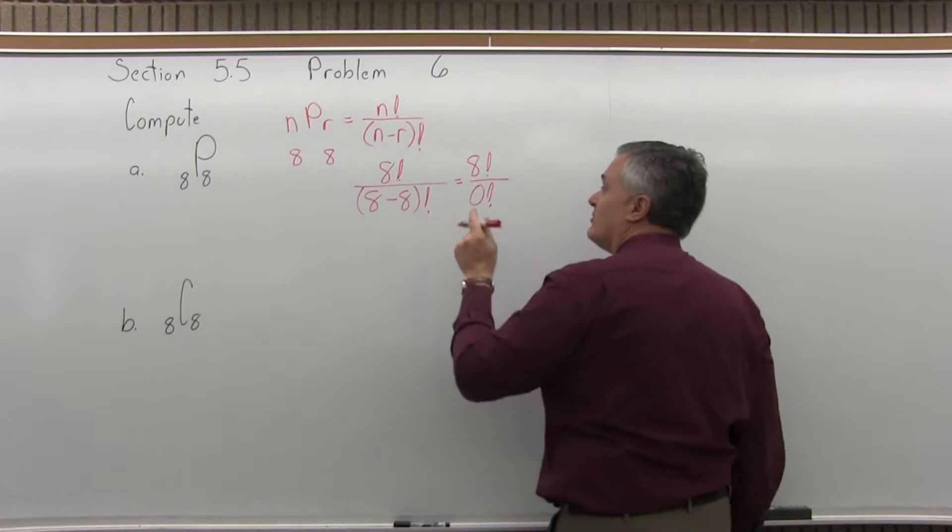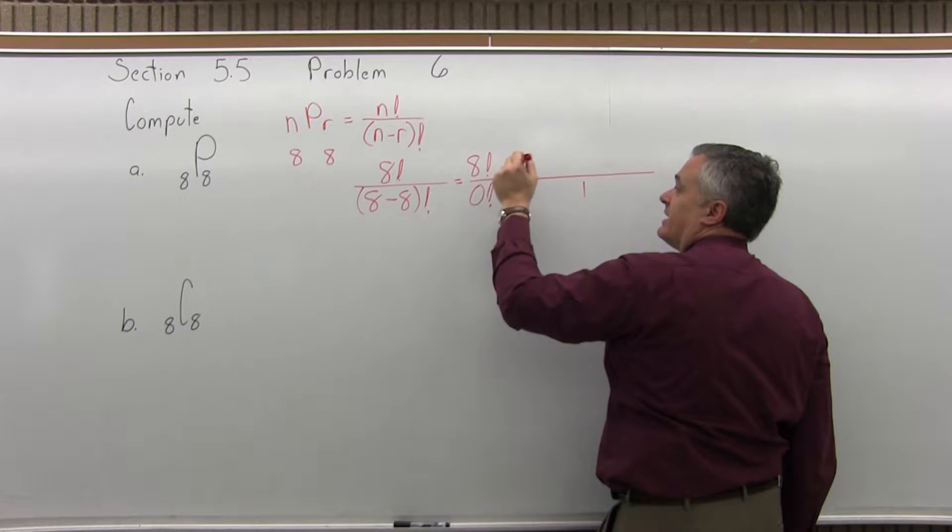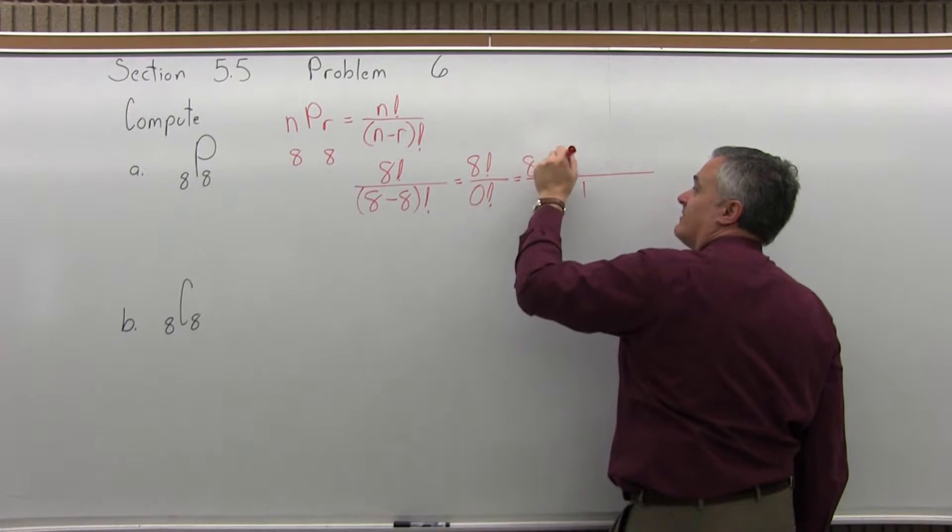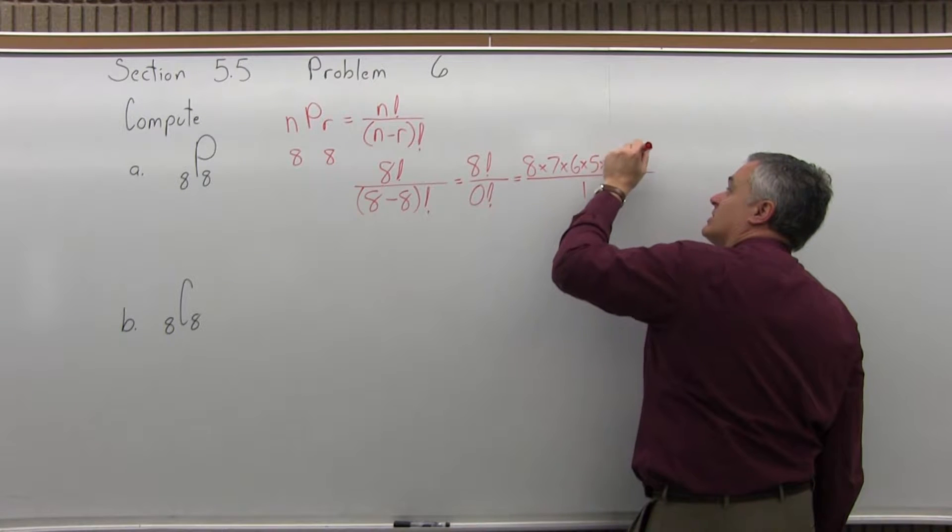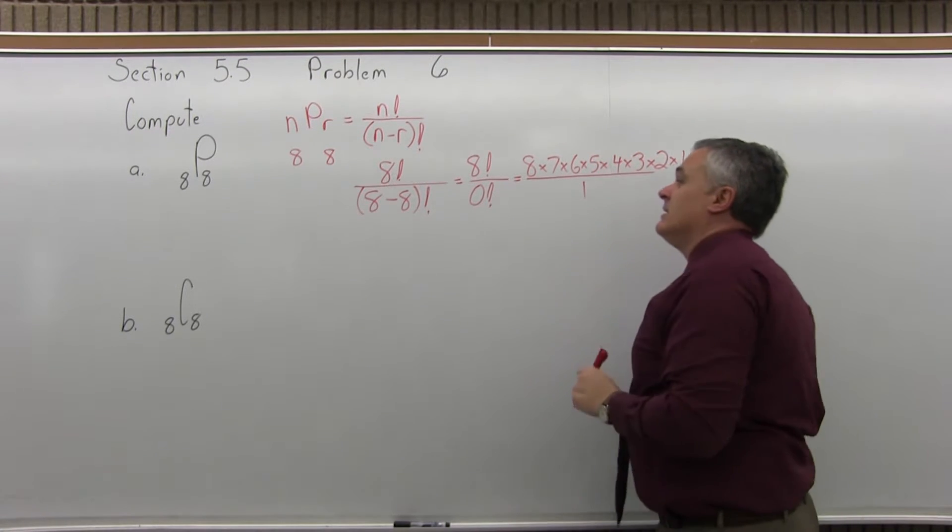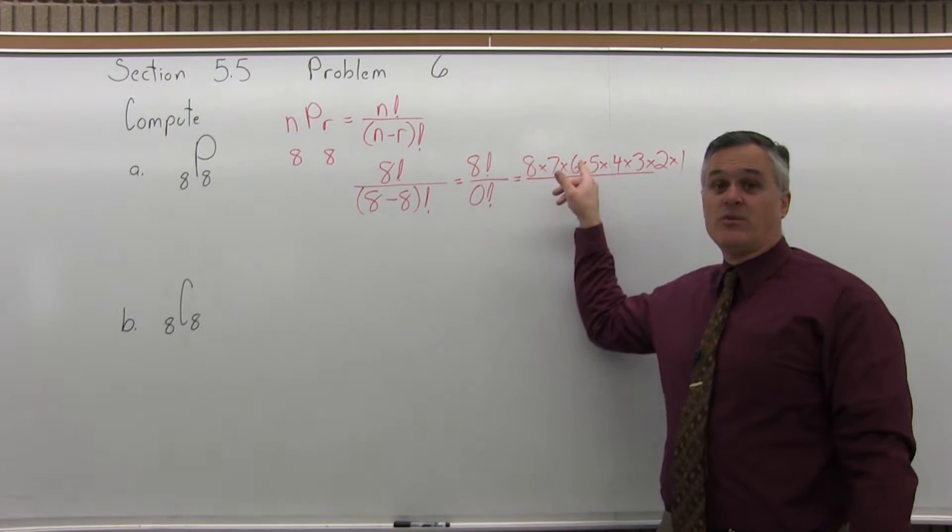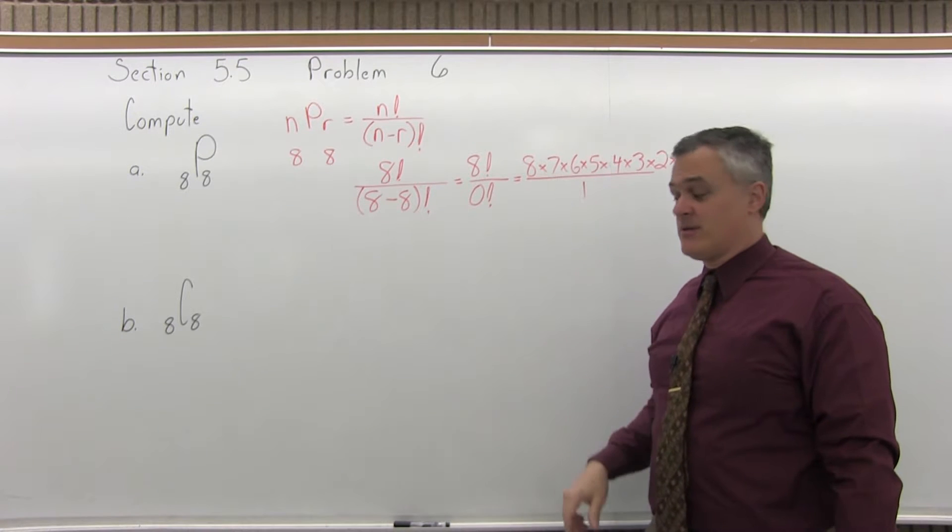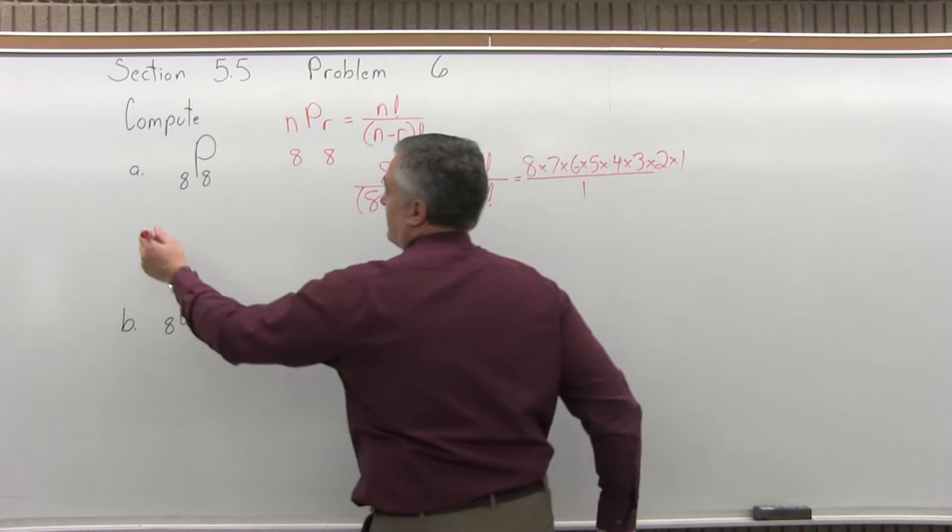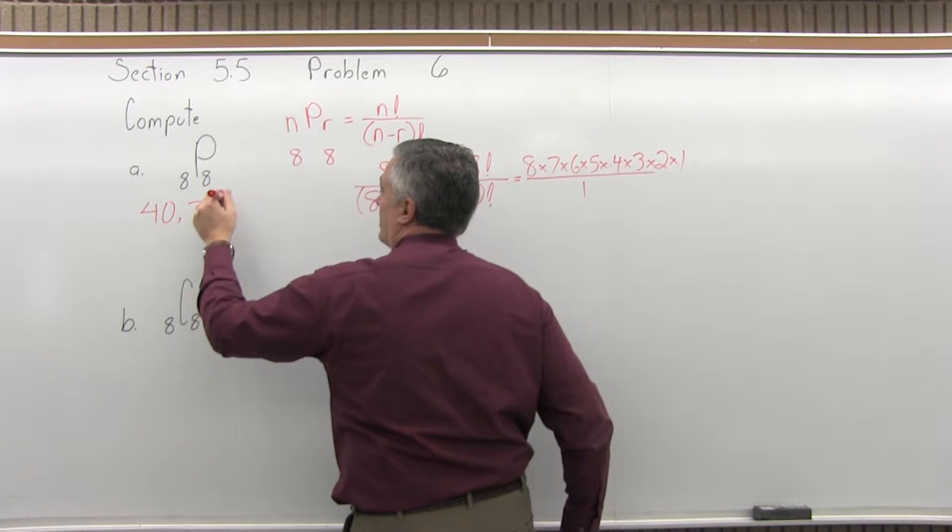So, in the bottom, you'll have 1, and in the top, it'll be 8 times 7 times 6 times 5 times 4 times 3 times 2 times 1. Ordinarily, when we do these, there's some amount of stuff that will cancel on the top and the bottom, but nothing really cancels. You just have to multiply that all out.